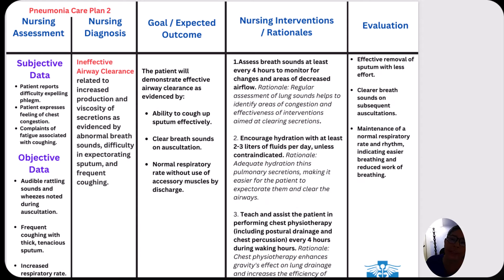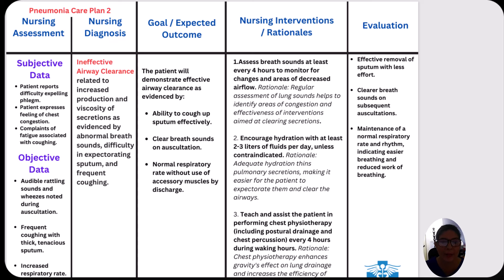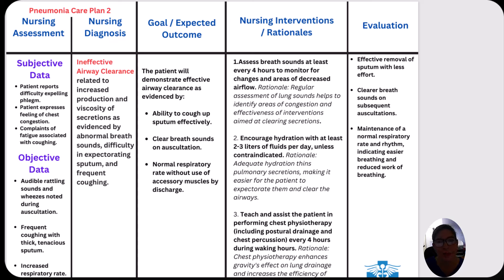For nursing care plan number two for pneumonia, we're going to do ineffective airway clearance. The diagnosis is: ineffective airway clearance related to increased production and viscosity of secretions as evidenced by abnormal breath sounds, difficulty in expectorating sputum, and frequent coughing. Subjective data: the patient reports difficulty expelling phlegm, expresses a feeling of chest congestion, and complains of fatigue associated with coughing.